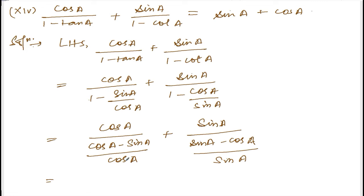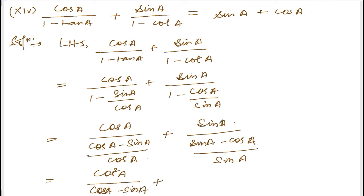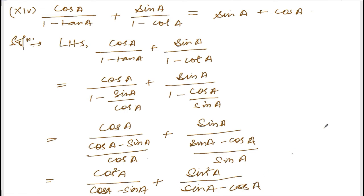So we get cos squared(a) divided by cos(a) minus sin(a), plus sin squared(a) divided by sin(a) minus cos(a).